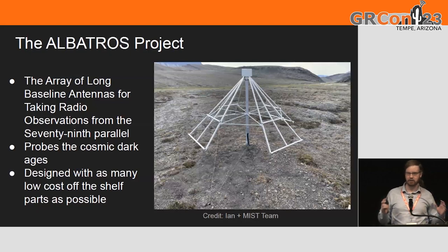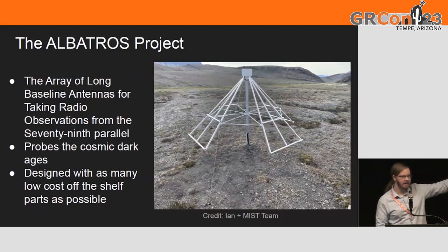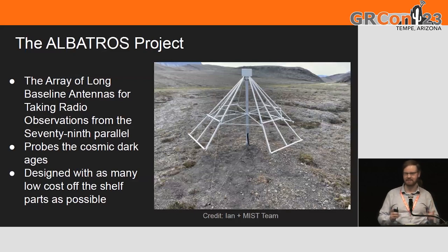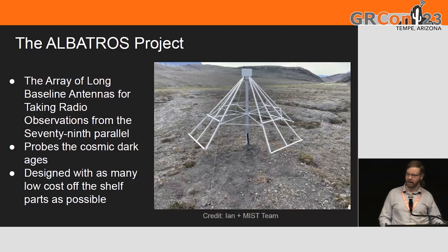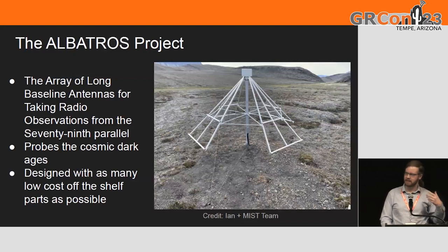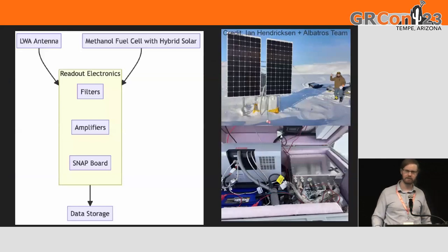Albatross stands for Array of Long Baseline Antennas for Taking Radio Observations from the Seventy-Ninth parallel. This is a probe into the cosmic dark age, which happens at a wavelength heavily interfered with by modern civilization — like shortwave radio. So to do this we have to go far away; that's why we put our antennas way up in northern Canada at the 79th parallel. McGill is uniquely positioned for this because we have a lot of access to northern areas and our Arctic research stations.